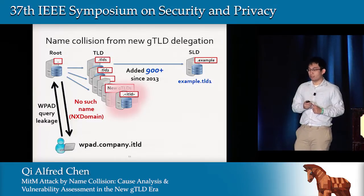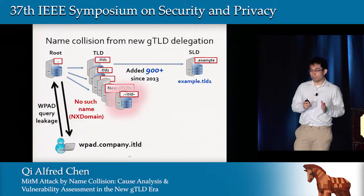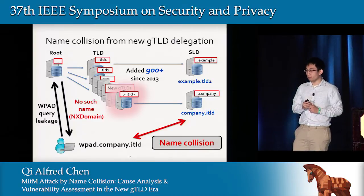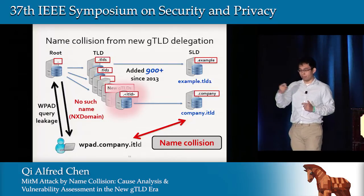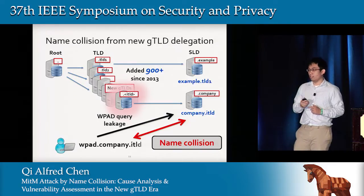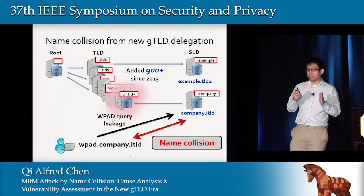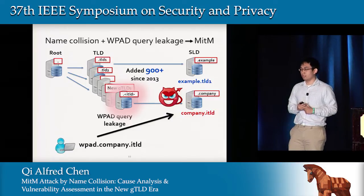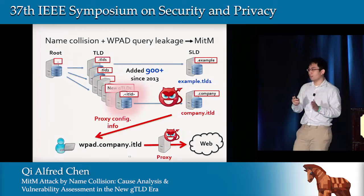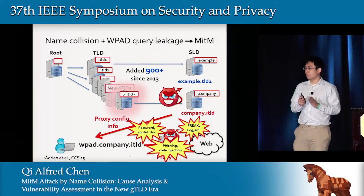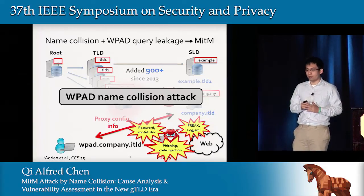As a result, many of these popular internal TLDs are now also delegated in the public namespace. This breaks the implied assumption made in internal namespace planning and allows the name collision problem to happen. Now WPAD queries leaked to the public namespace can be resolved by a registrant. If the attacker registers the colliding domain, they can instruct clients to use an attacker-controlled man-in-the-middle proxy, causing all the exploits mentioned earlier. We call this the WPAD name collision attack.